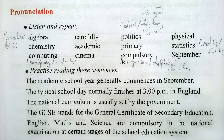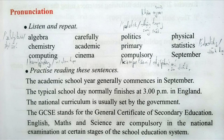The academic school year generally commences in September. The typical school day normally finishes at 3 p.m. in England. The national curriculum is usually set by the government. The GCSE stands for the General Certificate of Secondary Education. English, Maths, and Science are compulsory in the national examination at certain stages of the school education system.